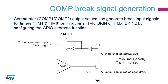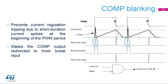Please see the timer training slides for more details. The comparator can be used in the cycle-by-cycle regulation loop for monitoring the peak value of the current flowing into the load. The purpose of the blanking function is to prevent incorrect current regulation tripping due to short-duration current spikes at the beginning of the PWM period. Short current spikes caused by activating the power switches can produce false pulses on the comparator output, marked by the blue color on the diagram. These pulses need to be masked by a blanking window to avoid false fault detection. The blanking window waveform can be generated by one of the timer output channels.